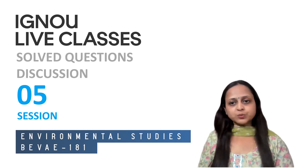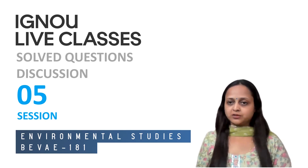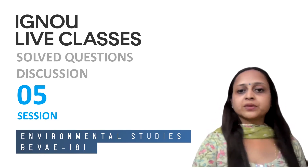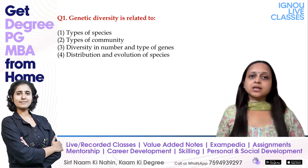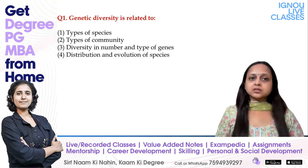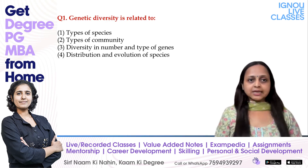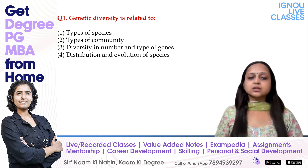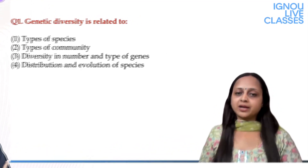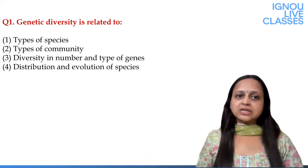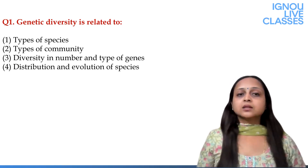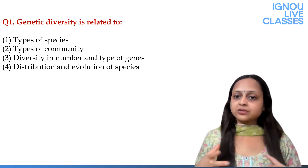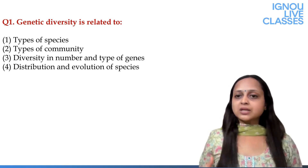The exam pattern for this paper is objective. Let's start with the first question of Session 5: Genetic diversity is related to — options are: first, types of the species; second, types of community; third, diversity in number and types of genes; fourth, distribution and evolution of the species. Genetic diversity means diversity and variation in genes.